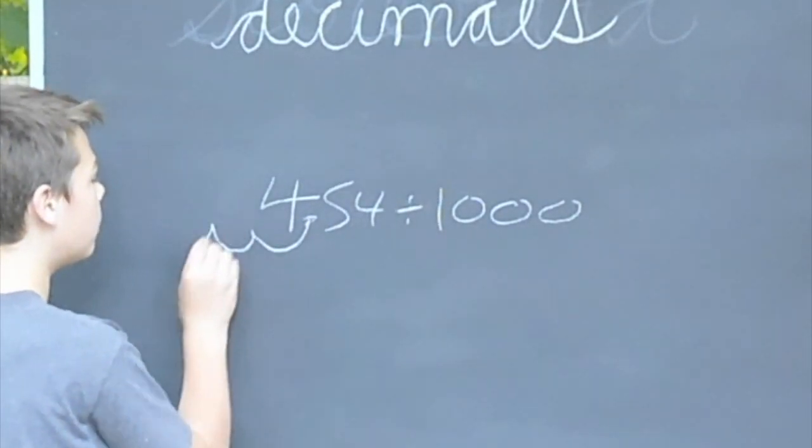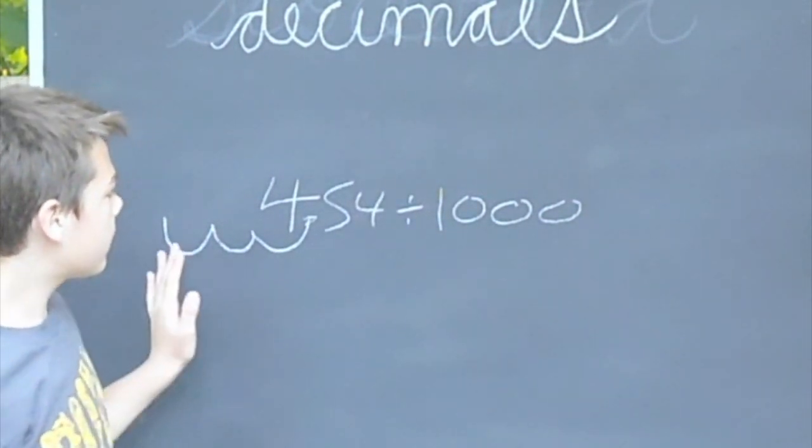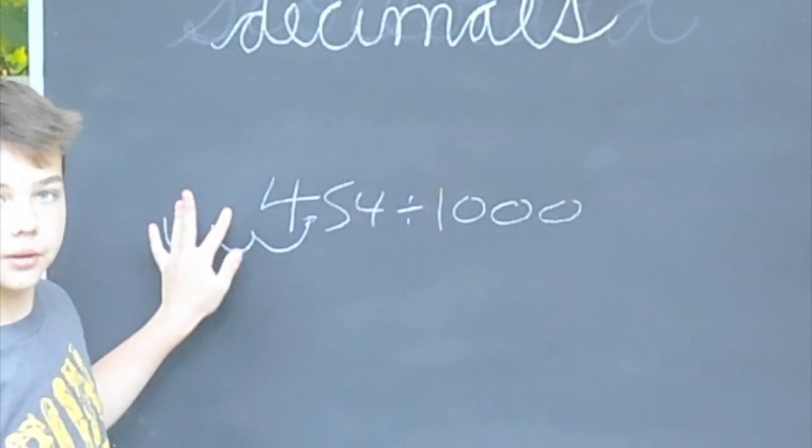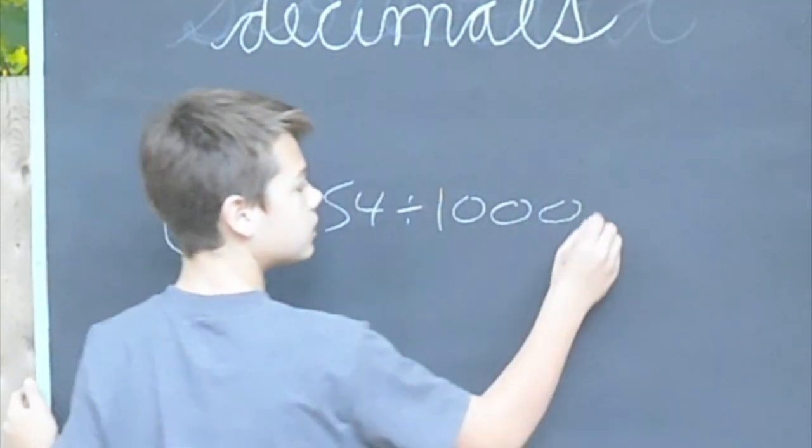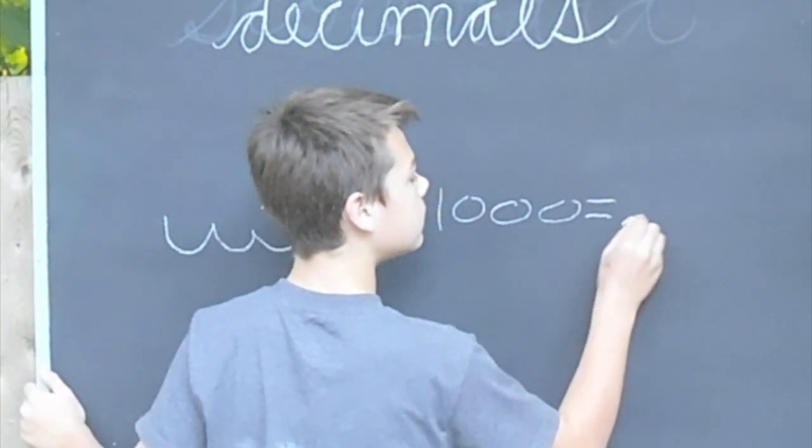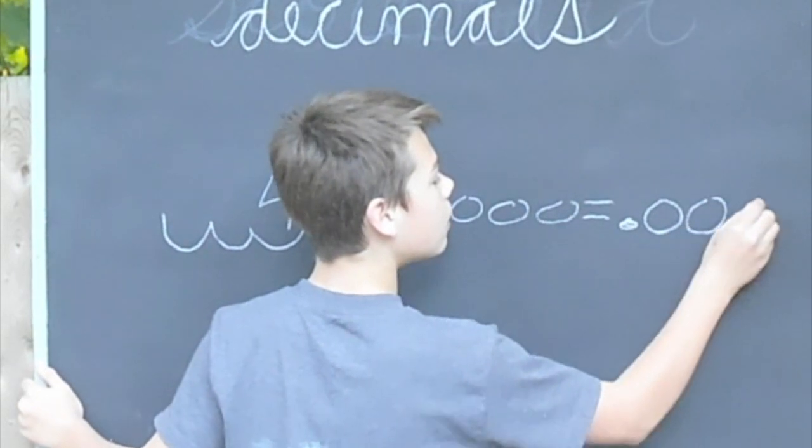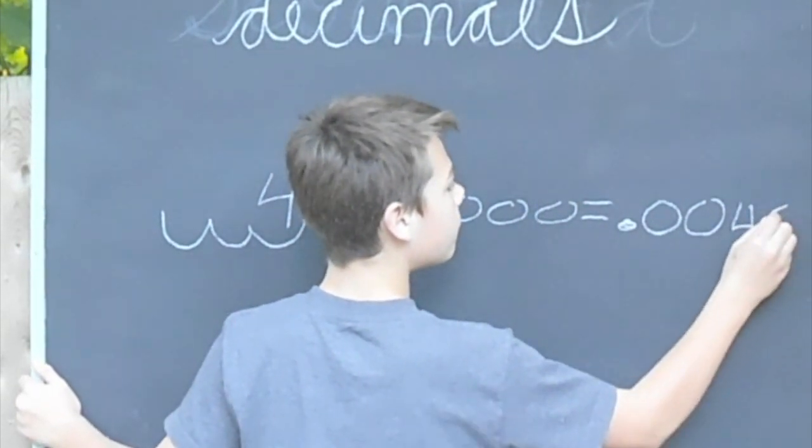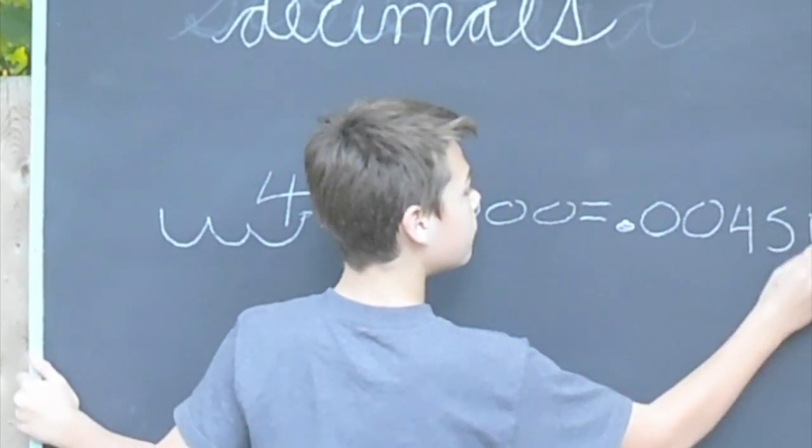1, 2, 3. So, what we're going to do is add the zeros. So, it will equal 0.00454.